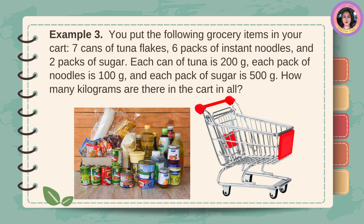Example number three: You put the following grocery items in your cart — 7 cans of tuna flakes, 6 packs of instant noodles, and 2 packs of sugar. Each can of tuna is 200 grams, each pack of noodles is 100 grams, and each pack of sugar is 500 grams. How many kilograms are there in the cart in all?